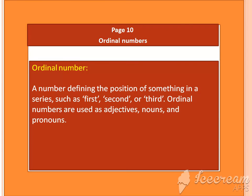Now come to page number 10. The question is: write the ordinal numbers from first to twenty in words. You must know what ordinal numbers are. A number defining the position of something in a series, such as first, second, or third. Ordinal numbers are used as adjectives, nouns, and pronouns — they tell you the position.